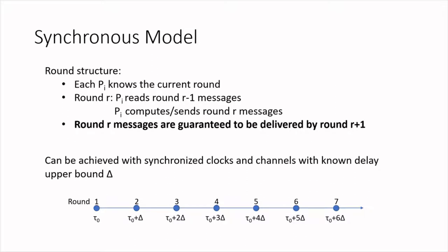Perhaps the most widely considered model in the MPC literature is the synchronous model. Here, protocols proceed in rounds. We assume that each party knows what the current round is, and in each round it reads the messages from the previous rounds, does some local computation, and sends the messages for the current round. A crucial assumption is that messages sent at round R are guaranteed to be delivered by round R+1. In reality, we can achieve this round structure assuming synchronized clocks and channels with a known delay upper bound delta.